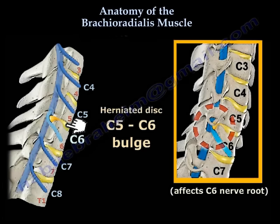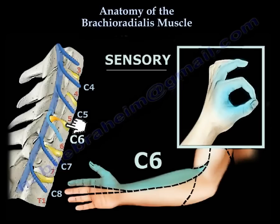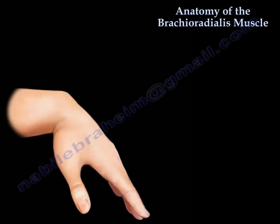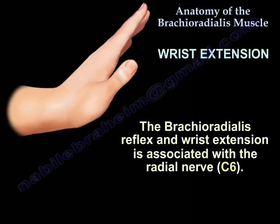In cervical radiculopathy of C6, the brachioradialis reflex is affected. The brachioradialis reflex is C6. If you consider that the brachioradialis is innervated by the radial nerve, the brachioradialis and the wrist extensors share the same root, which is C6. So wrist extension and the brachioradialis reflex both come from C6 via the radial nerve.